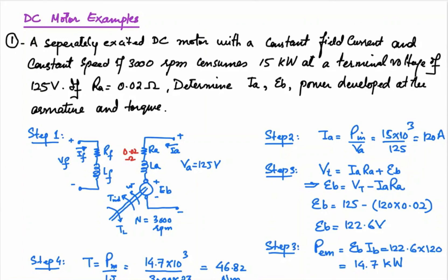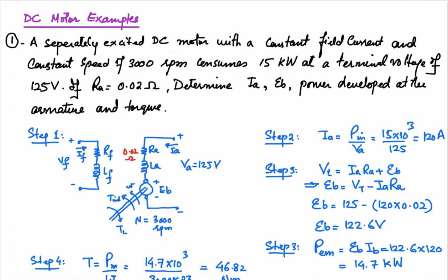In this video we will discuss some examples of DC machines. The first example shows a separately excited DC motor with a constant field current and a constant speed of 3000 rpm, consuming 15 kilowatt at a terminal voltage of 125 volt. Armature resistance is 0.02 ohm. We are supposed to determine the armature current, back EMF, power developed at the armature, and the torque. The first step is to draw the circuit diagram.